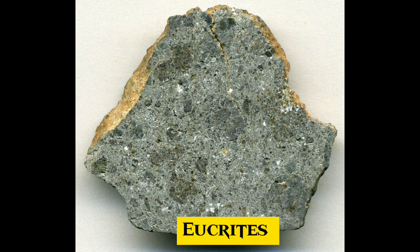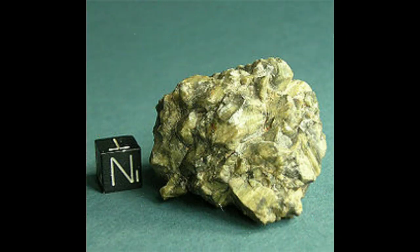10. Eucrites are achondritic stony meteorites, many of which originate from the surface of the asteroid 4 Vesta, and as such are part of the HED meteorite clan. Eucrites consist of basaltic rock from the crust of 4 Vesta or a similar parent body.